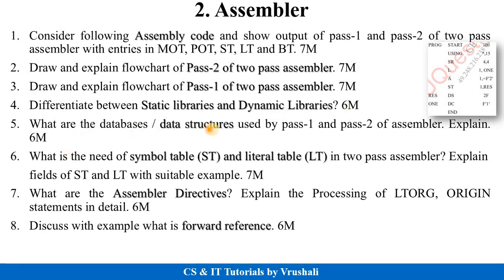The next question is: what are the databases and data structures used by pass one and pass two assembler? Explain for six marks. Next: what is the need of a symbol table and literal table in a two-pass assembler? Explain the fields of the symbol table and literal table with a suitable example for seven to eight marks. What are assembler directives? Explain the processing of LTORG and origin statements in detail for six marks. Also, what is forward reference with example for six marks? For the assembler topic, prepare one-pass and two-pass assembler, the assembly code question, data structures, databases, and ST and LT tables.